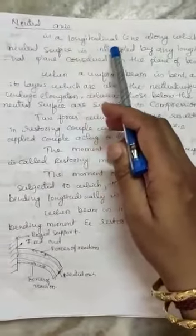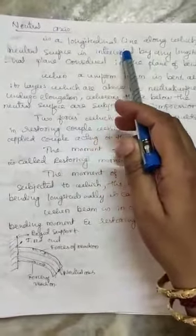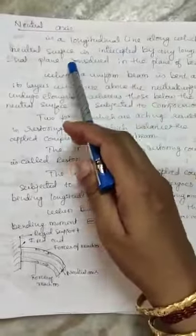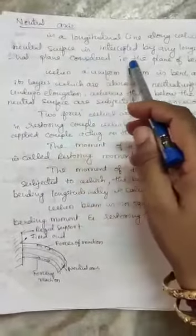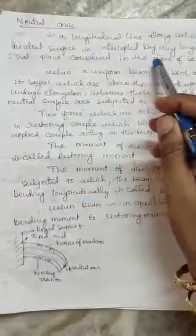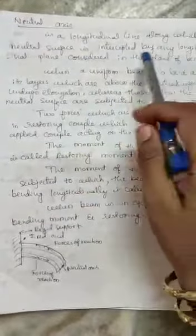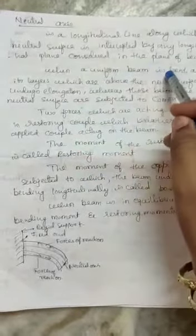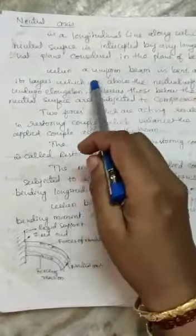The neutral axis is defined as the longitudinal line along which the neutral surface is intercepted by a longitudinal plane considered in the plane of bending.